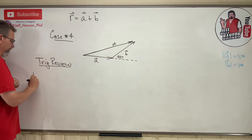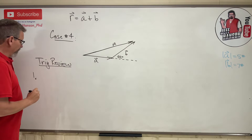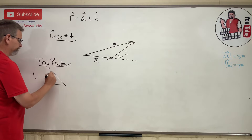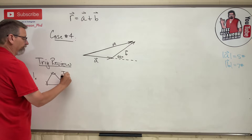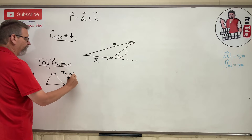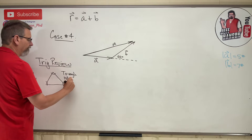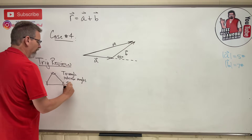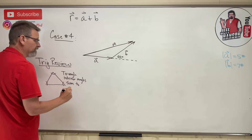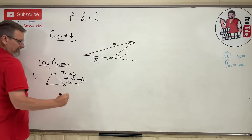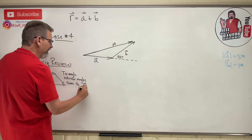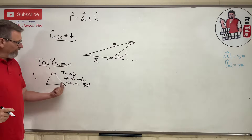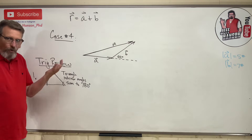Trig review number one: triangle interior angles sum to 180 degrees. Simple. If I give you two angles, you know the third one because they always have to add up to 180.